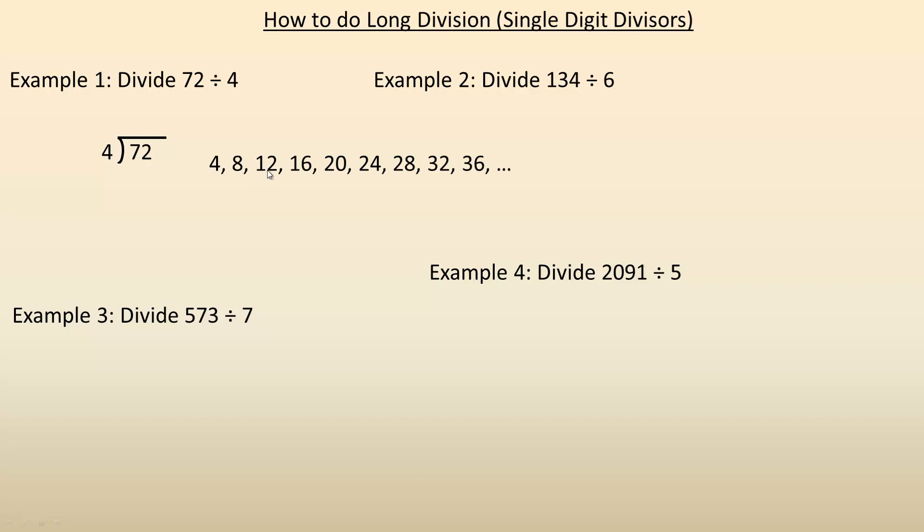They go 4, 8, 12, counting by 4s, 16, 20, 24, 28, 32, 36, etc. So you see the first multiple of 4 is 4, the second multiple is 8. 7 is smaller than 8. So 4 only goes into 7 one whole time with less than 4 left over. So because the second multiple is bigger than that 7, it only goes in once.